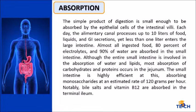Absorption: the simple products of digestion are small enough to be absorbed by the epithelial cells of the intestinal villi. Each day, the alimentary canal processes up to 10 liters of food, liquids, and GI secretions, yet less than one liter enters the large intestine. Almost all ingested food, 80% of electrolytes, and 90% of water are absorbed in the small intestine. Most absorption of carbohydrates and proteins occurs in the jejunum, at an estimated rate of 120 grams per hour. Bile salts, vitamin B12, and water are absorbed in the terminal ileum.